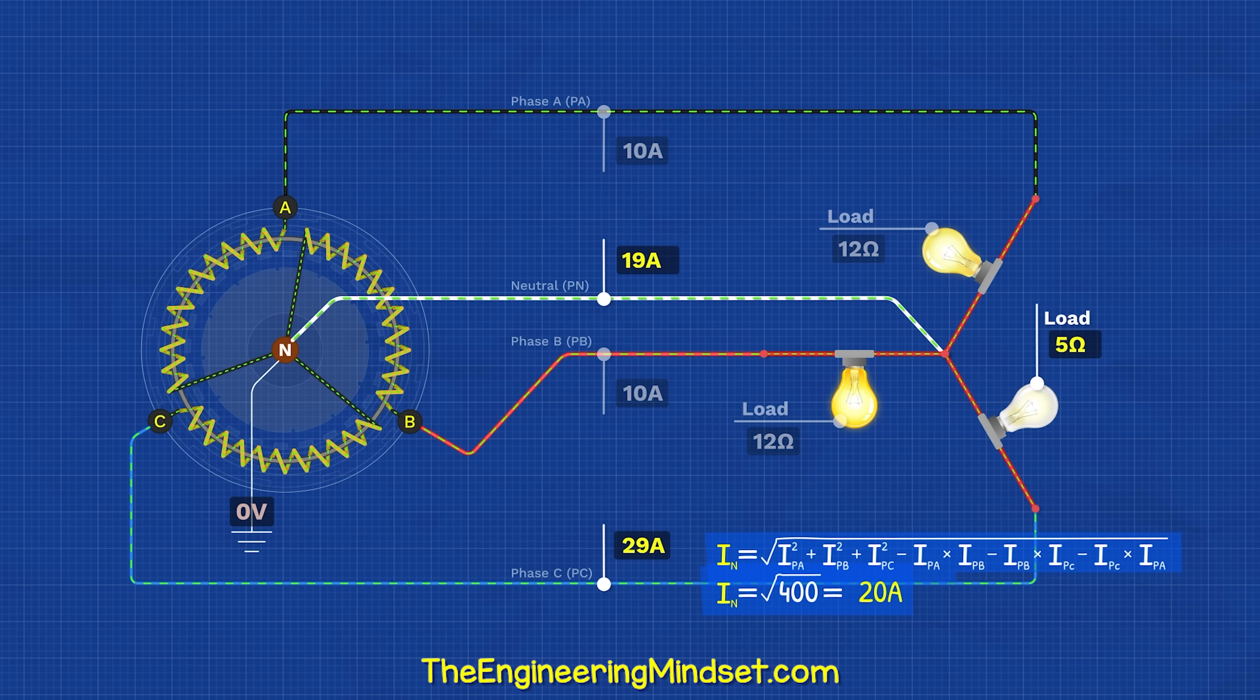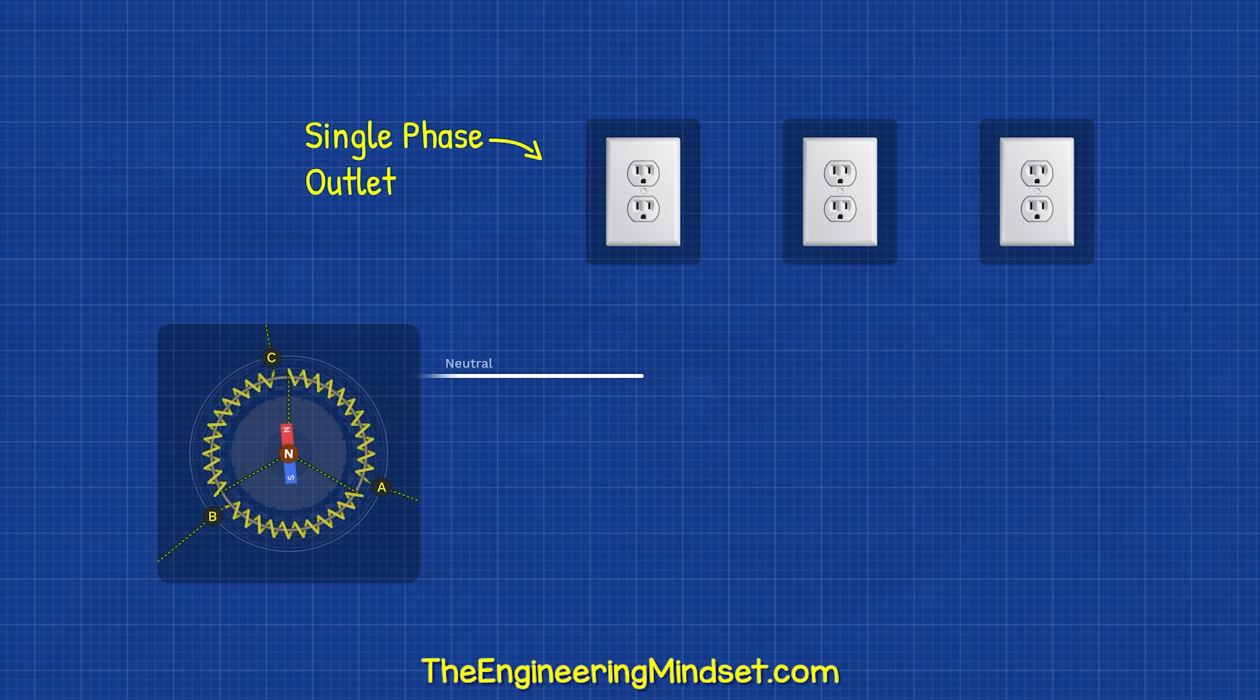However, if one phase increases to say 30 amps, then 20 amps will flow on the neutral. The neutral will carry the difference back to the generator or transformer to keep the system balanced. Because we now have a neutral, we can connect across just one phase and neutral. This gives us single phase.